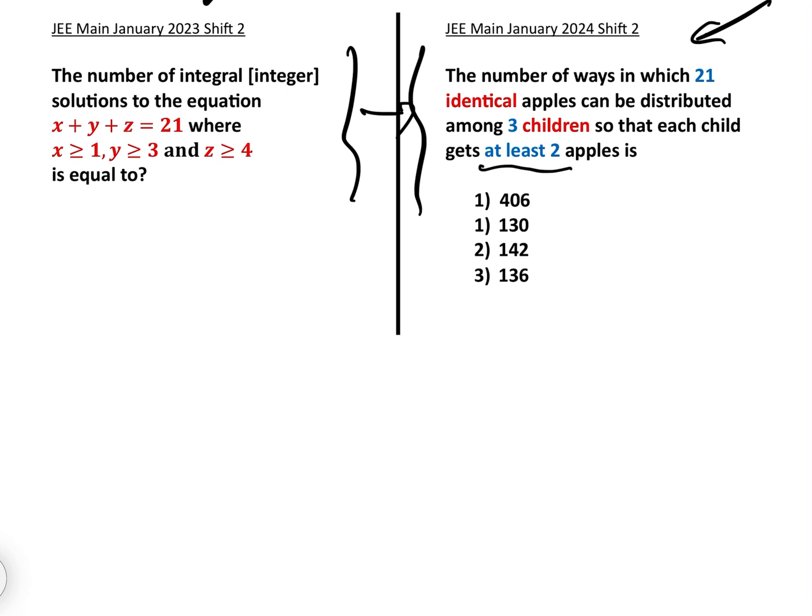Which leaves us with 15 apples, which we're going to use the formula m plus n minus one C m minus one, which gives us 17 C 2, which gave us 136 as the answer to that question.